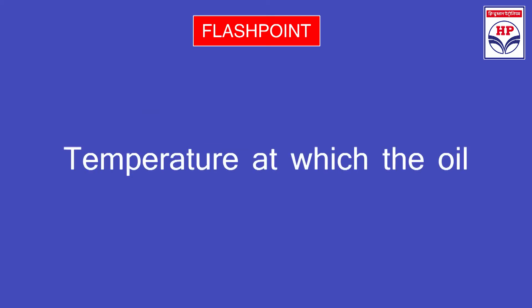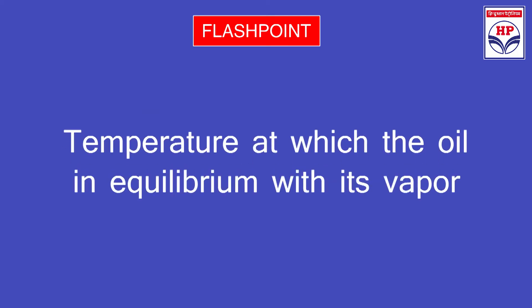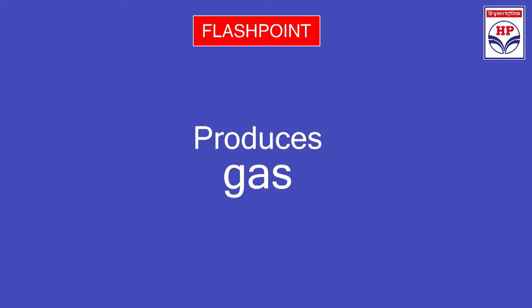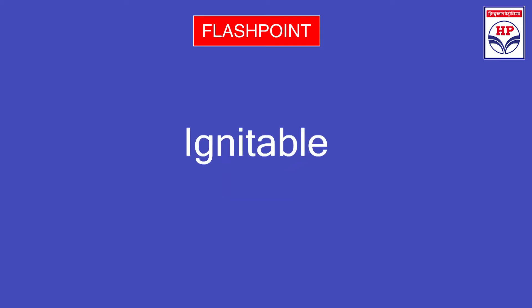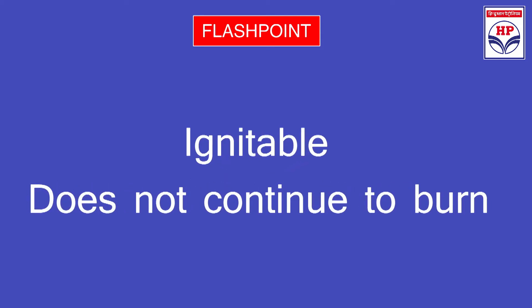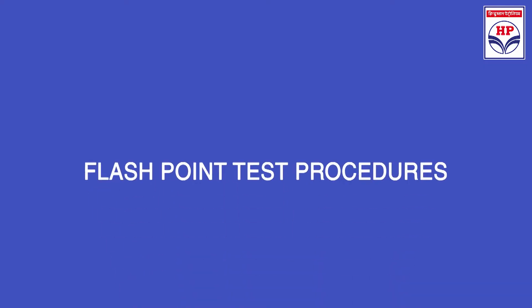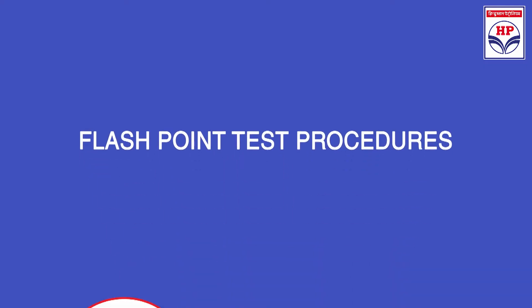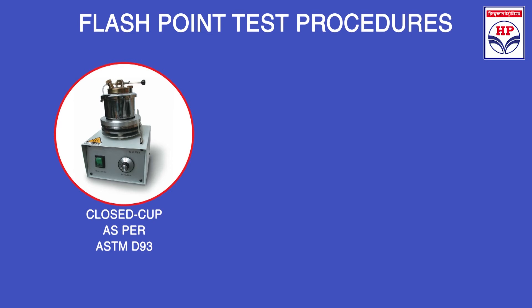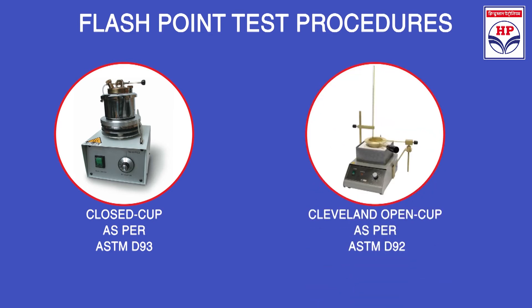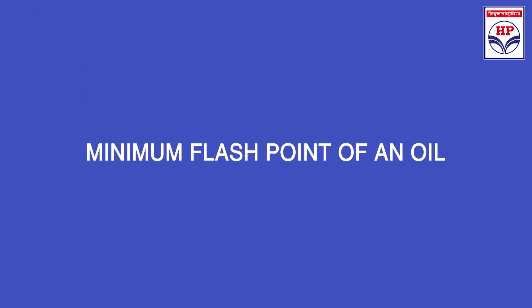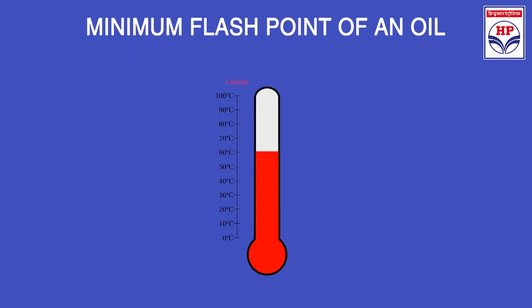Flash point is a temperature at which oil, in equilibrium with its vapour, produces a gas that is ignitable but doesn't continue to burn when exposed to a spark or flame source. There are two types of flash point test procedures: the closed cup as per ASTM D93, or the Cleveland open cup procedure described in ASTM D92. The minimum flash point of an oil under normal operating conditions should be 90 degrees centigrade above the oil temperature being used.